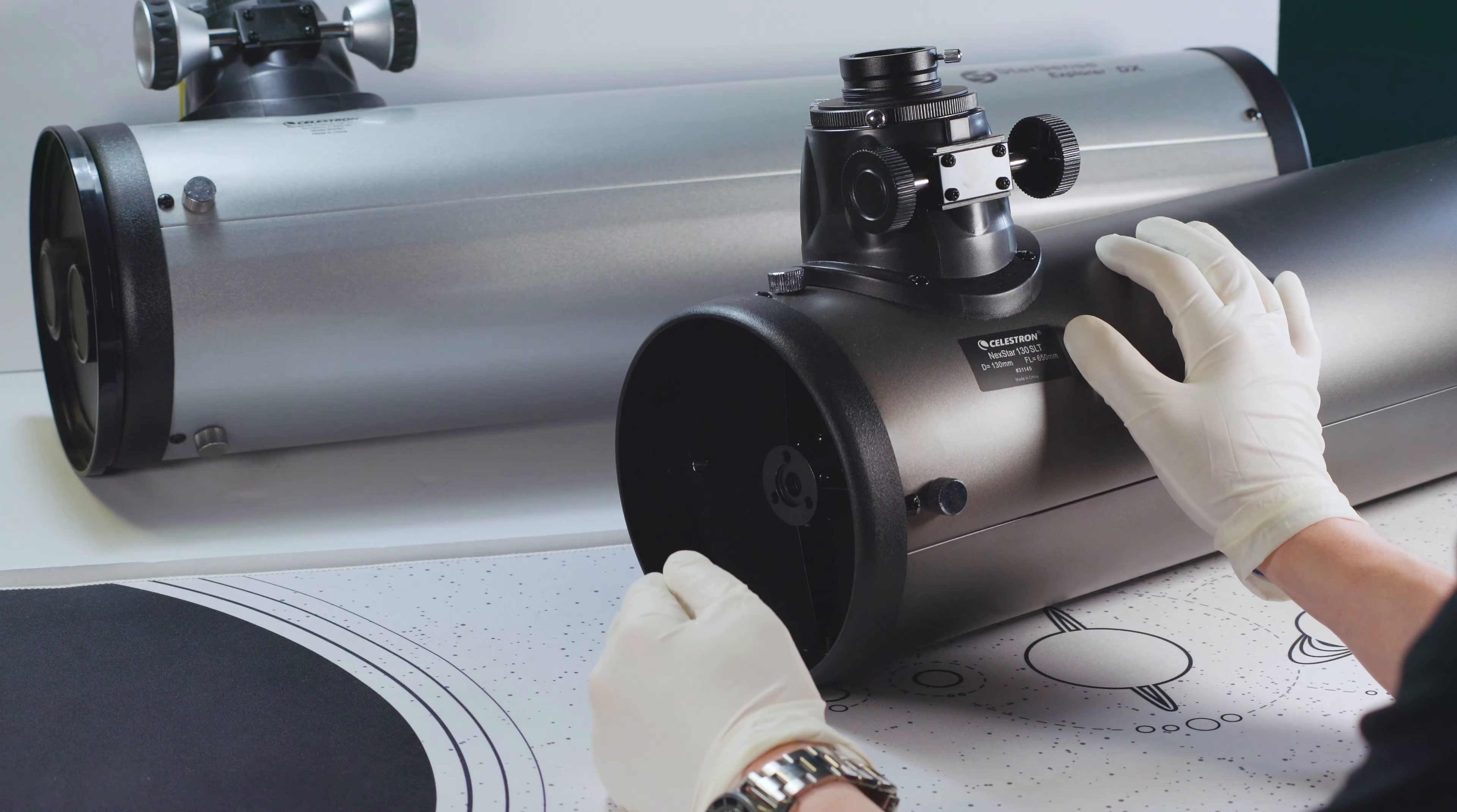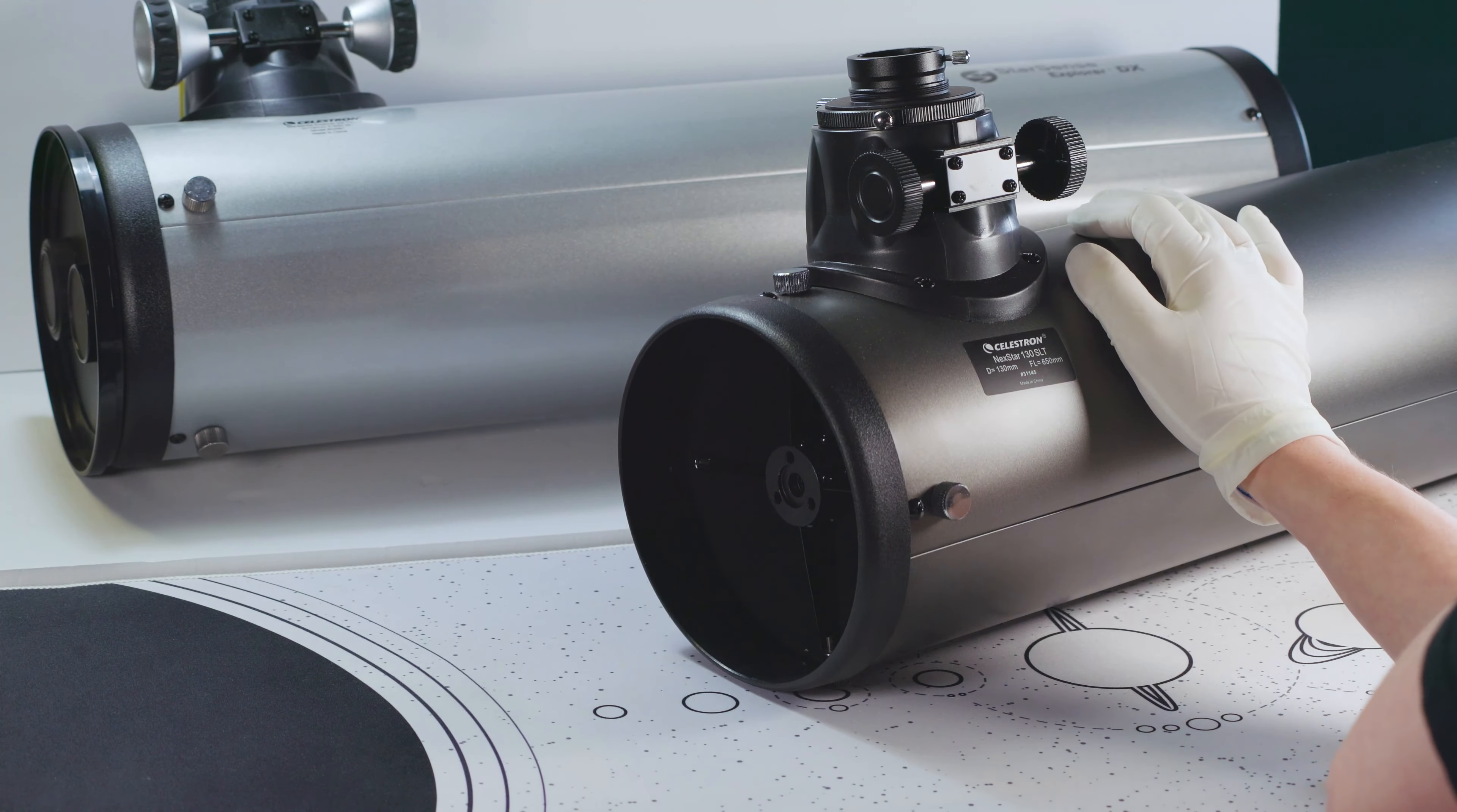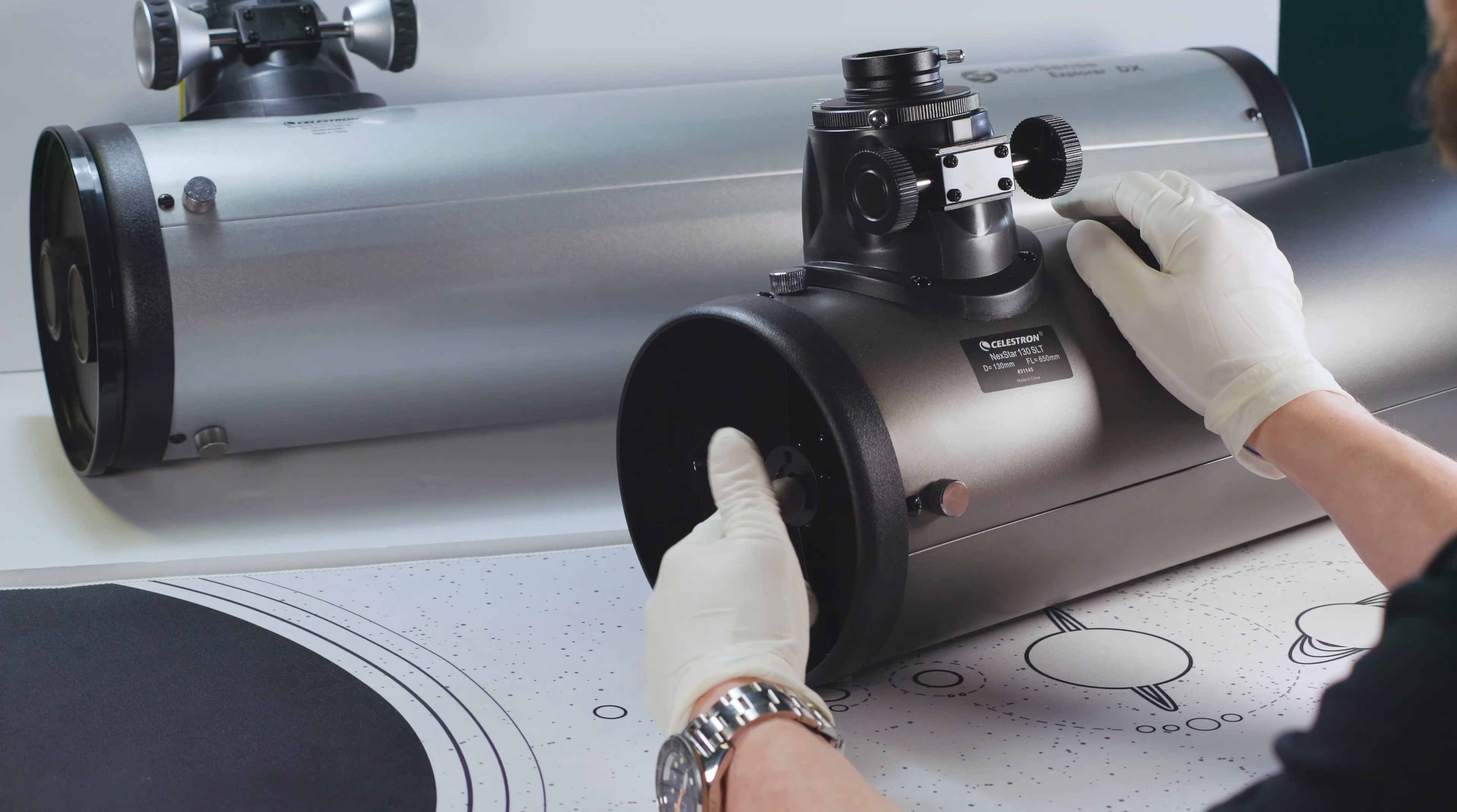Now the way that you do this in the stock configuration would be by getting a hex head wrench or tool and adjusting three screws that are inset in these three holes right here. And so what this upgraded knob allows you to do is replace these with something that has this coin edge bezel and sticks out a little bit further, so that you can manually adjust it by hand whenever you need to adjust the secondary mirror.